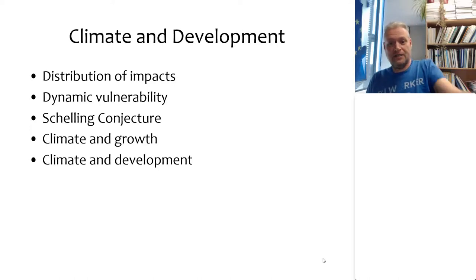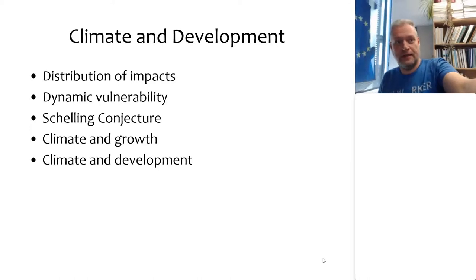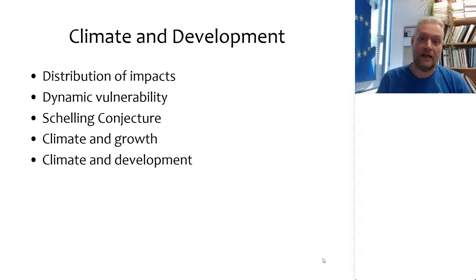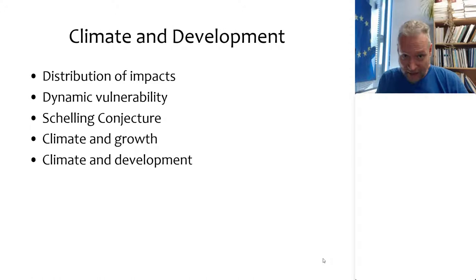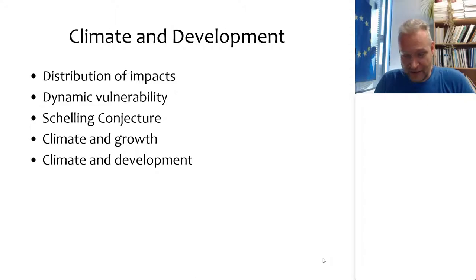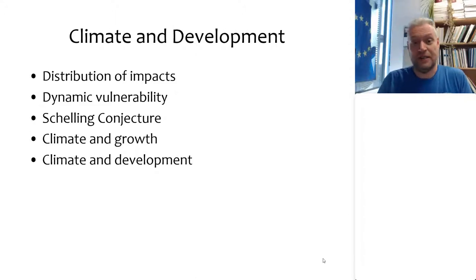This is the first of the online lectures. Today I'm going to talk about the distribution of impacts. Last time we talked about the aggregate impact — what climate change would do to the welfare of the average human being. Today we're going to talk about the impacts across, particularly the income spectrum across the globe.